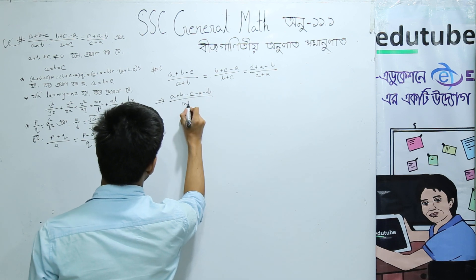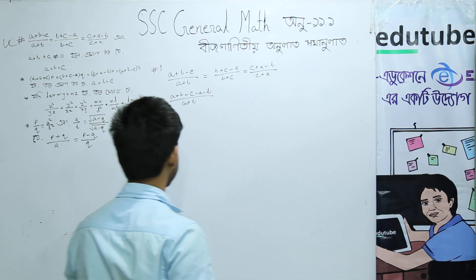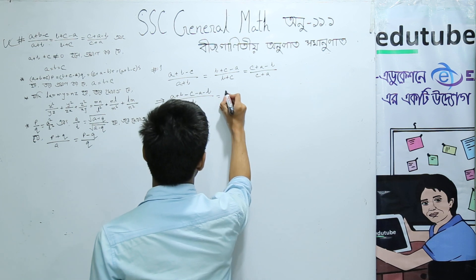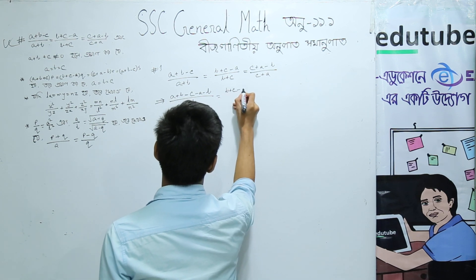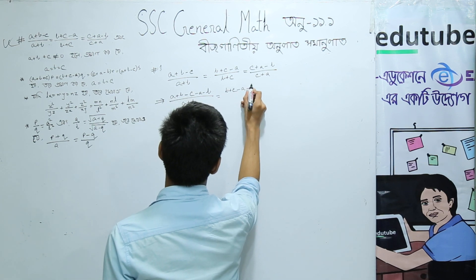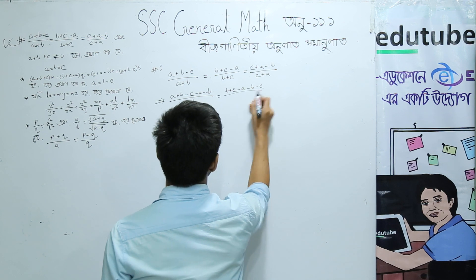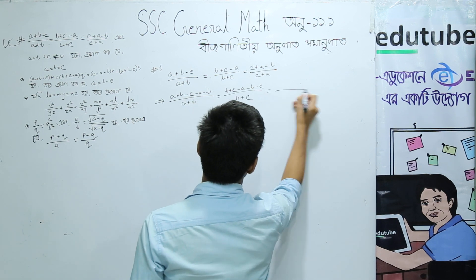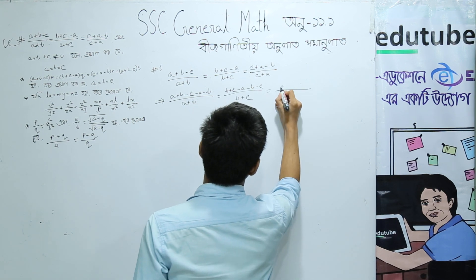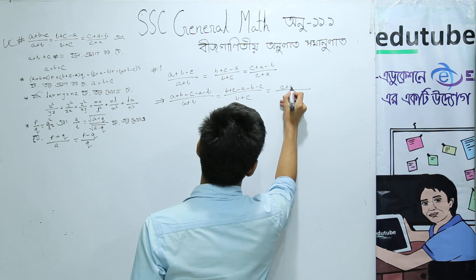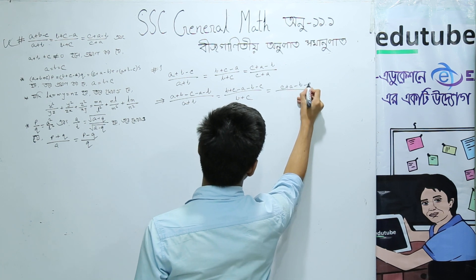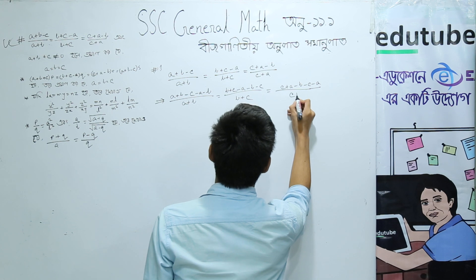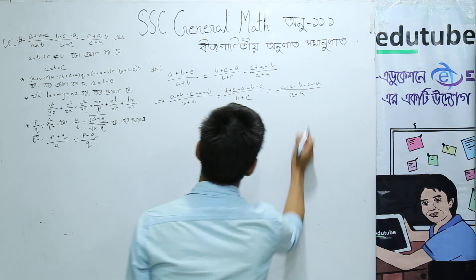Expanding: a plus b plus c minus a minus b minus c minus a minus c plus c plus c plus a minus b minus c minus a minus b minus c minus a by c plus a.